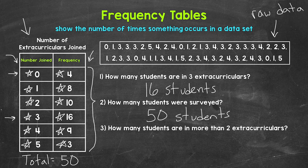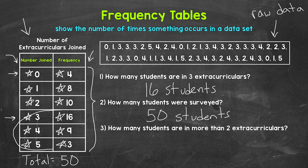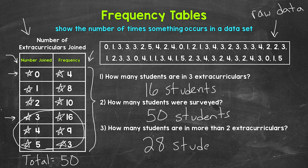Lastly, number 3: how many students are in more than 2 extracurriculars? Since 2 is not included, we need to look at 3, 4, and 5. That's 16 plus 9 is 25, plus 3 is 28. So 28 students are in more than 2 extracurriculars. That's our ungrouped example — let's move on to the grouped example.